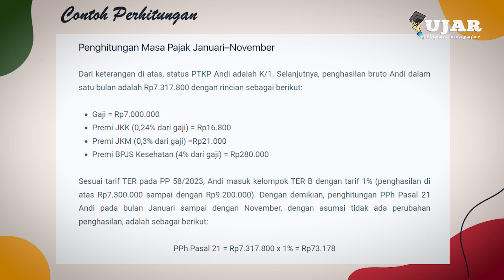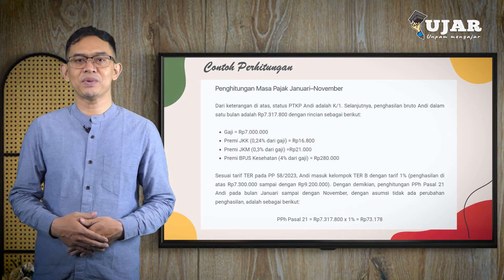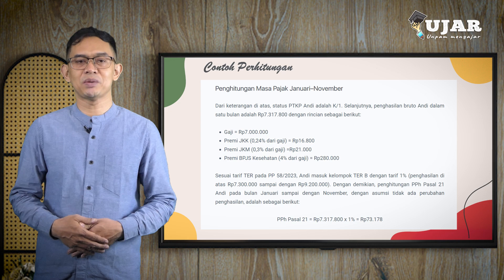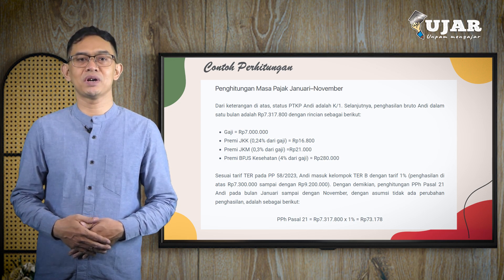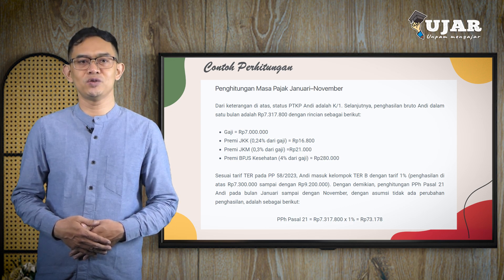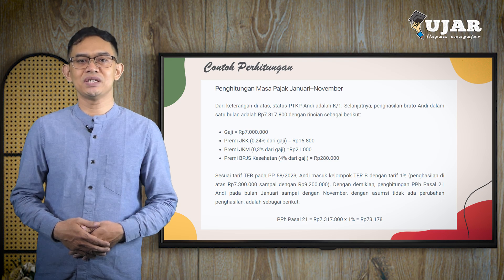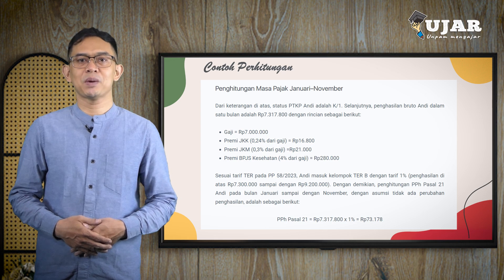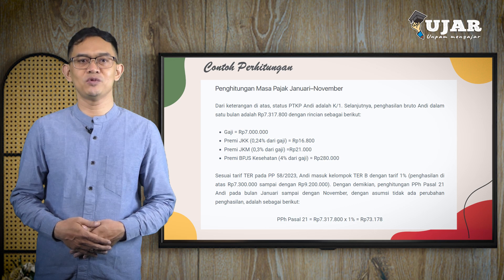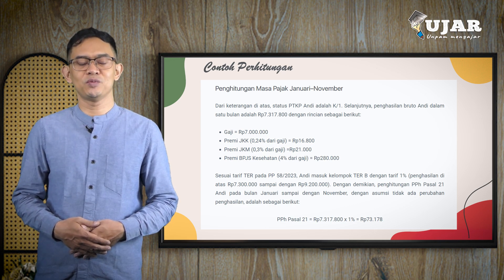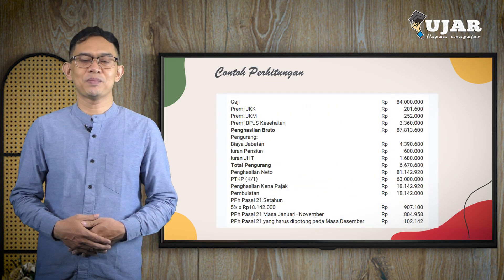Penghasilan bruto Andi dalam satu bulan adalah Rp. 7.317.800 dengan rincian: gaji Rp. 7 juta; premi JKK 0,24% dari gaji yaitu sebesar Rp. 16.800; premi JKM 0,30% dari gaji yaitu Rp. 21.000; premi BPJS Kesehatan 4% dari gaji yaitu Rp. 280.000. Sesuai tarif TER pada PP No. 58 tahun 2023, Andi masuk kelompok TER B dengan tarif 1% untuk penghasilan di atas Rp. 7,3 juta sampai dengan Rp. 9,2 juta. Dengan demikian, perhitungan PPH Pasal 21 Andi pada bulan Januari sampai dengan November dengan asumsi tidak ada perubahan penghasilan adalah: PPH 21 = Rp. 7.317.800 × 1% = Rp. 73.178.